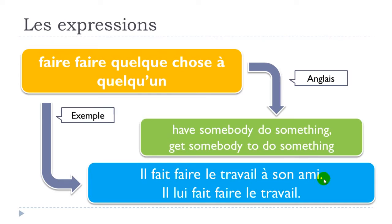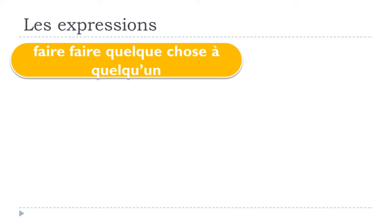In this example, you can see that the first faire is conjugated — it's the present form il fait — and then the second verb faire stays at the infinitive form: il fait faire le travail à son ami. To avoid repeating words, the complément d'objet indirect à son ami can be replaced by the pronoun lui: il lui fait faire le travail.